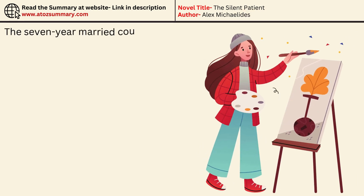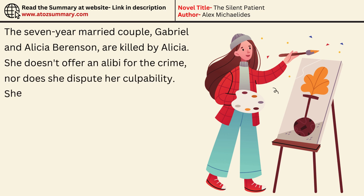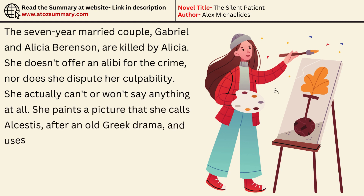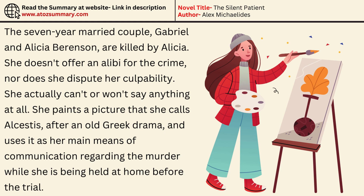The seven-year married couple, Gabriel and Alicia Berenson — Gabriel is killed by Alicia. She doesn't offer an alibi for the crime, nor does she dispute her culpability. She actually can't or won't say anything at all. She paints a picture that she calls Alcestis, after an old Greek drama, and uses it as her main means of communication regarding the murder while she is being held before the trial.